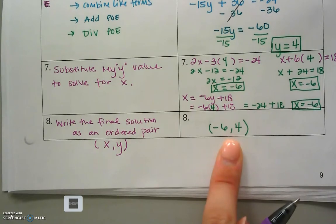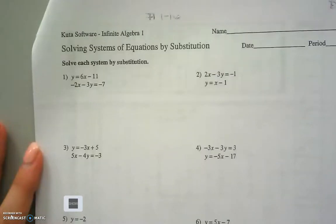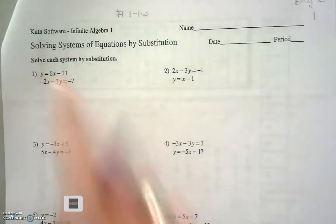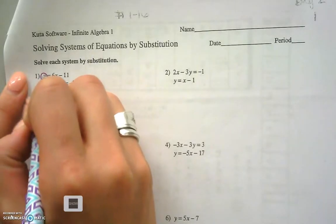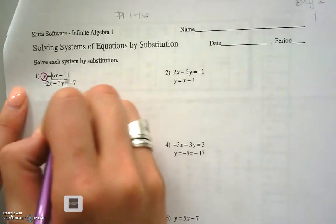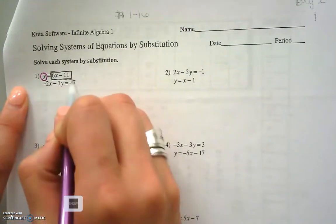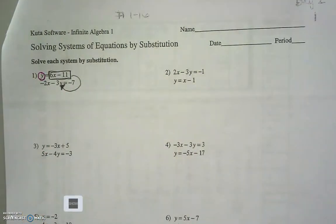Now let's look at one more example. In example one, we can substitute already. I told you we need a variable by itself, or a variable with a coefficient of one. Well, this variable is totally by itself. So that tells me I can take 6x minus 11 and substitute it in for the other y — that's the variable I get to substitute in for.